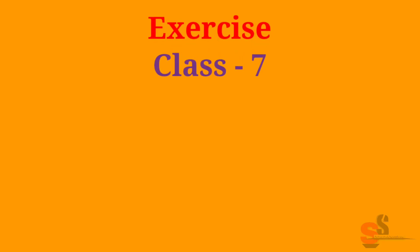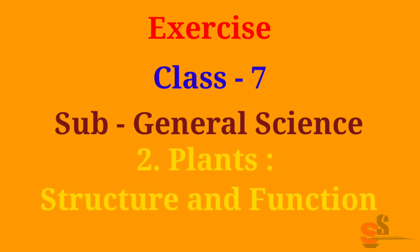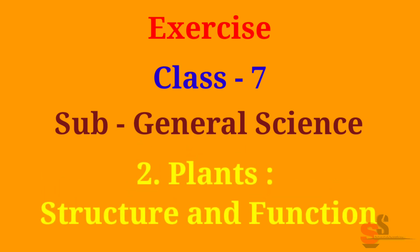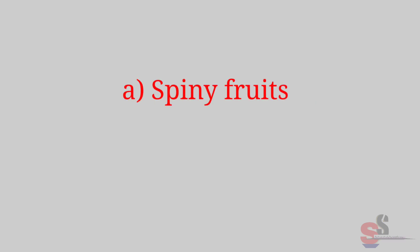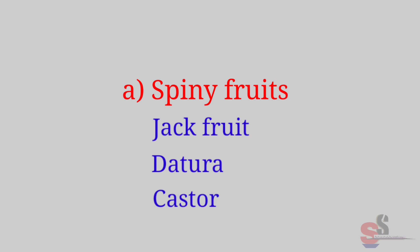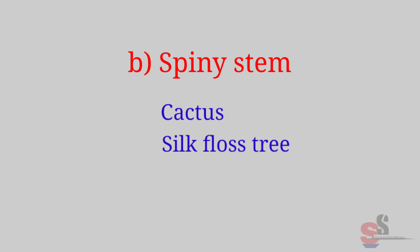Exercise Class 7, Subject General Science, Chapter No. 2: Plants, Structure and Function. Question 1: Give examples of 3 plants that have: A. Spiny fruits — Jackfruit, Dhatura, Custard. B. Spiny stem — Cactus, Silk floss tree, Silk cotton tree.